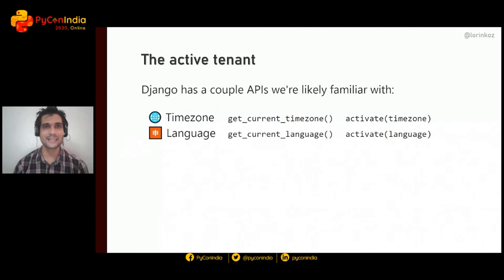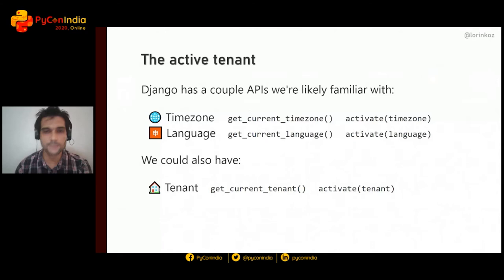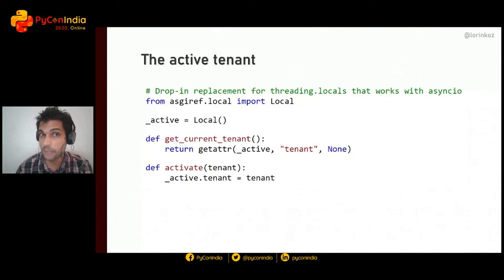This has to work even outside the request-response cycle — in management commands and Celery tasks, where there's no request object to interrogate. Django has APIs for getting and setting an active something, like timezone and language, and we can extend this behavior to also get and set an active tenant.